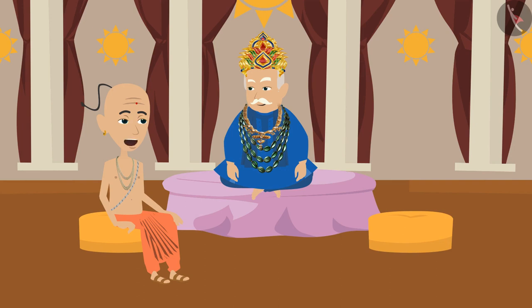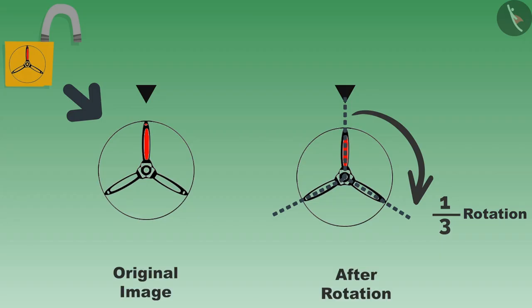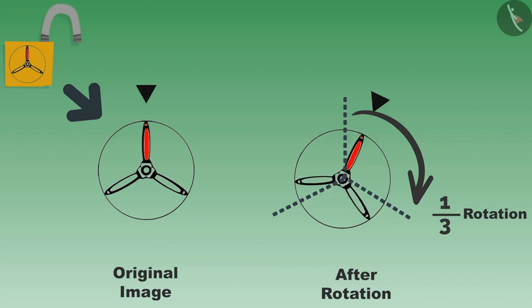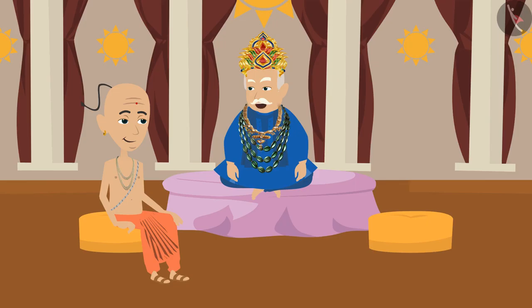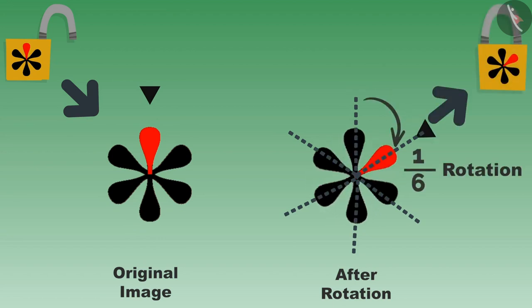'How does that happen, Tenali Rama?' 'Look, I am going to show you by rotating this lock. Now it is open and after rotating in this manner it is closed.' 'Yes Tenali Rama, now I can see it has rotated once. I understood your trick. The other lock which opens after one-sixth rotation looks like this and after closing will look like this. I am proud of your wisdom Tenali Rama.'